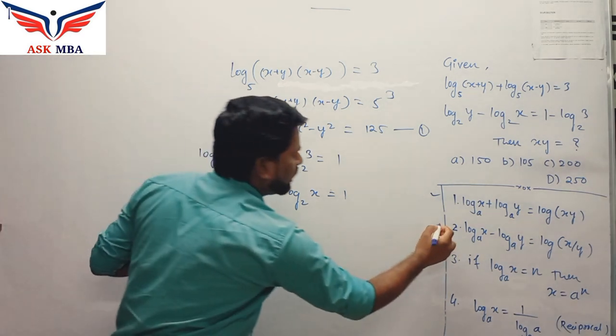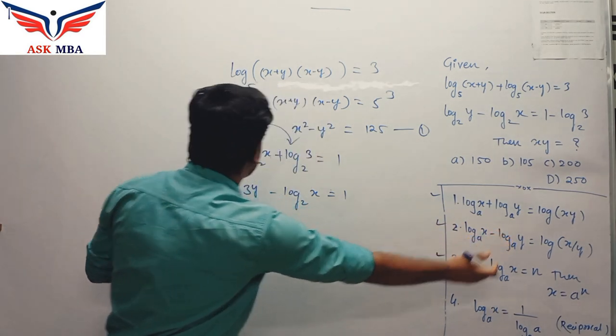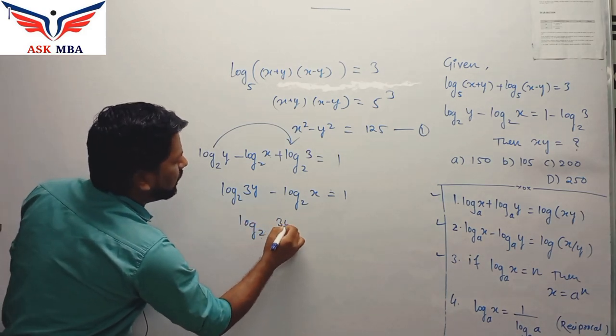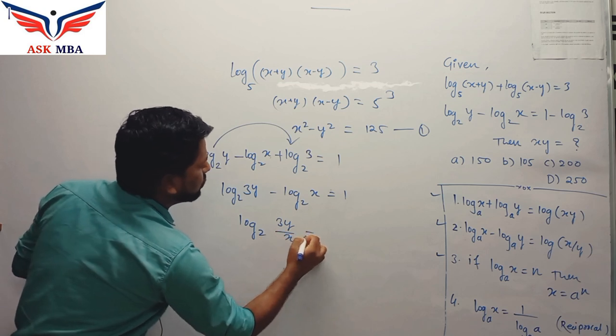So again, you can use the second property as we have a subtraction here. So we will get log base 2 of 3y upon x is equal to 1.